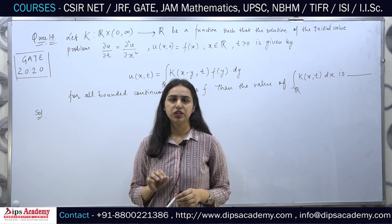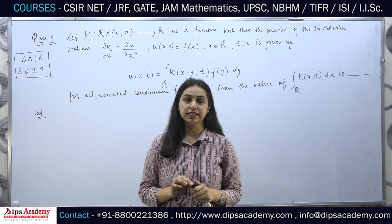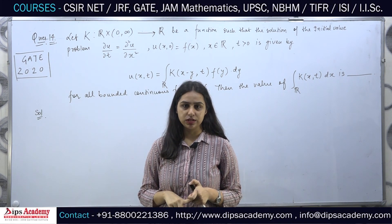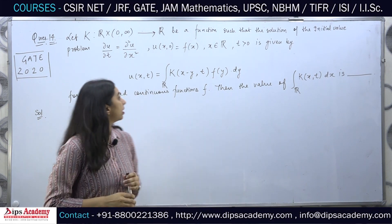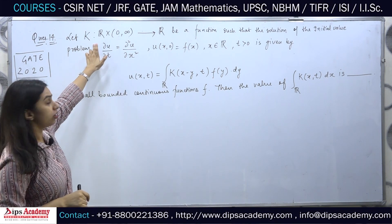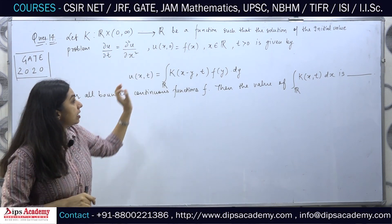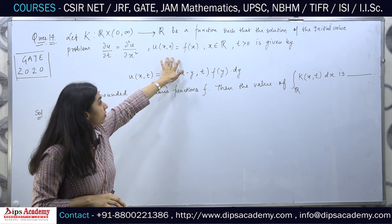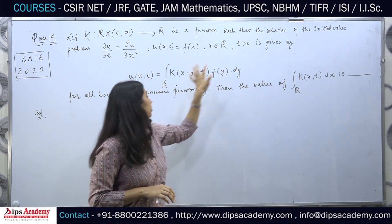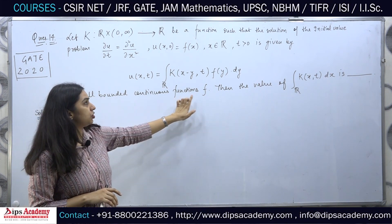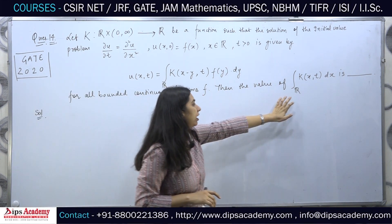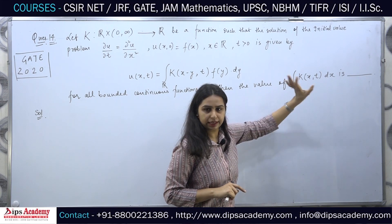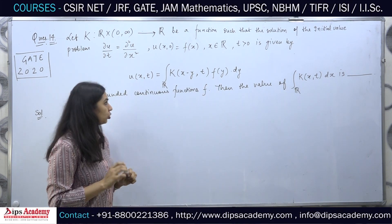Hello everyone, today we will be discussing a question from GATE 2020, according to the recent question paper released by GATE. It is question number 14, a question from partial differential equations. In the question, there is a function k from R cross (0, infinity) to R such that the solution of the initial value problem — a heat equation — is given for all bounded continuous functions f. We are asked to find the value of the integration from minus infinity to infinity of k(x,t) with respect to x.